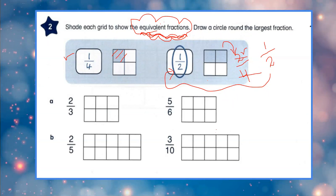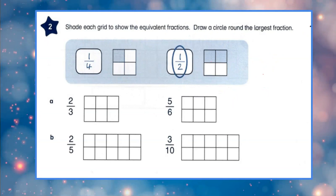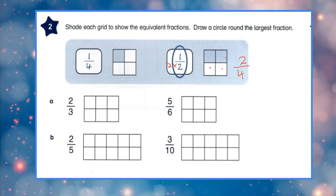So remember: if they are giving you the shading part under the heading of equivalent fractions, what you have to do is reduce the number and try to understand the situation. Step number one: count the boxes. How many boxes do you have? 4 boxes. How many are colored? 2 boxes. It means this number is multiplied by 2, and if we are multiplying the denominator we have to apply the same rule in the numerator.